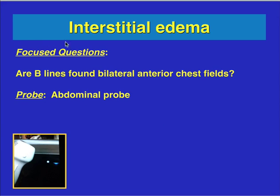The two key questions are: are B lines found in the bilateral anterior chest fields, and is lung sliding present or absent? Those are the important questions you should be asking to see if there's pulmonary edema. This is a very important concept, because you will be using the evaluation for pulmonary edema in other parts of critical care ultrasound — such as cardiac exam, evaluating the acute shock patient, and the acute hypoxic patient. I actually use this very frequently during my rounds in the ICU.